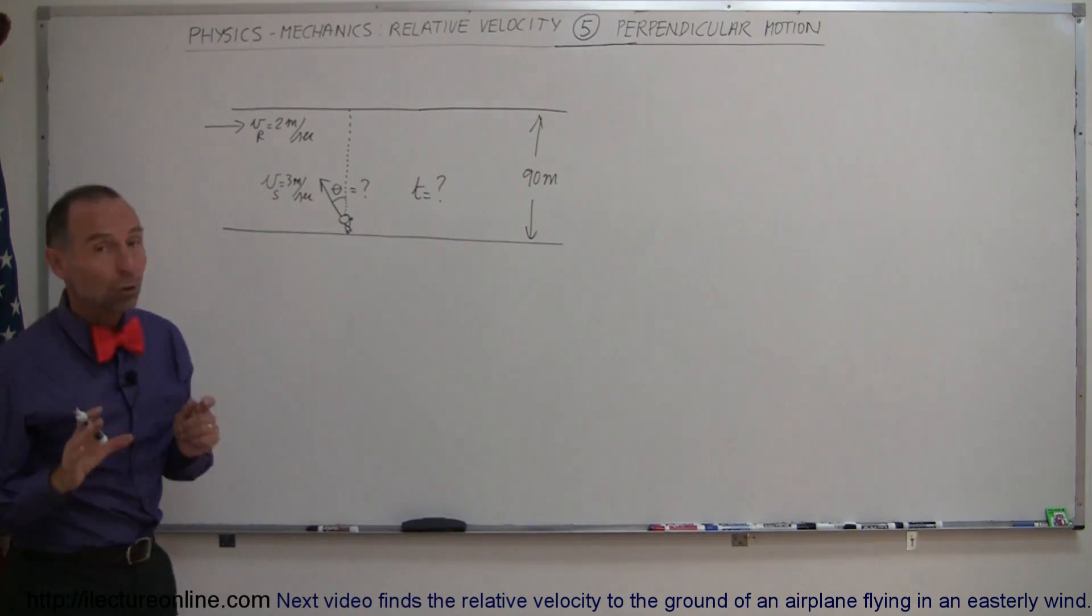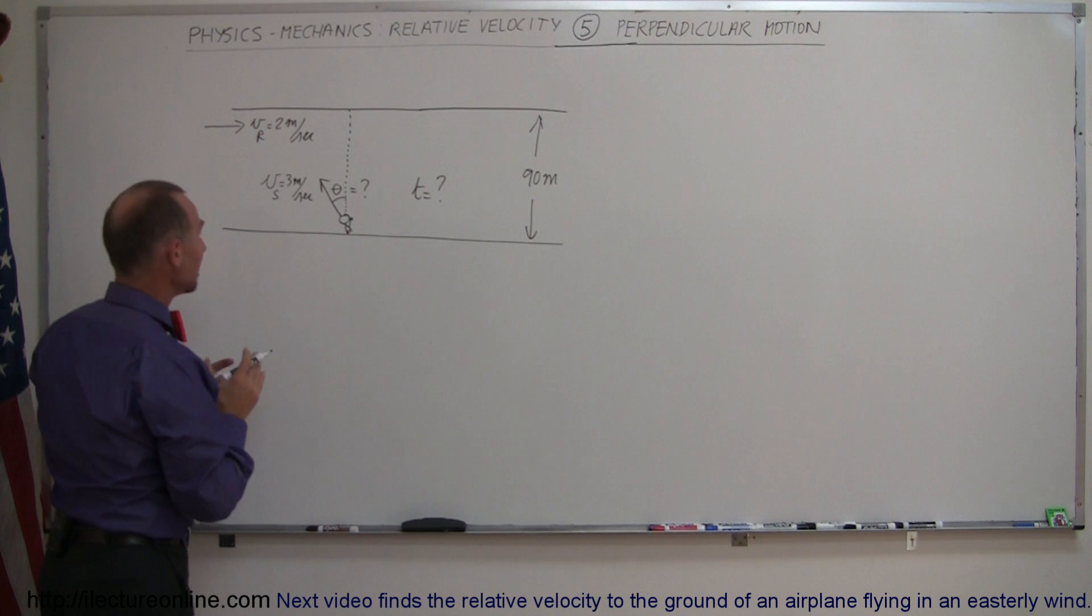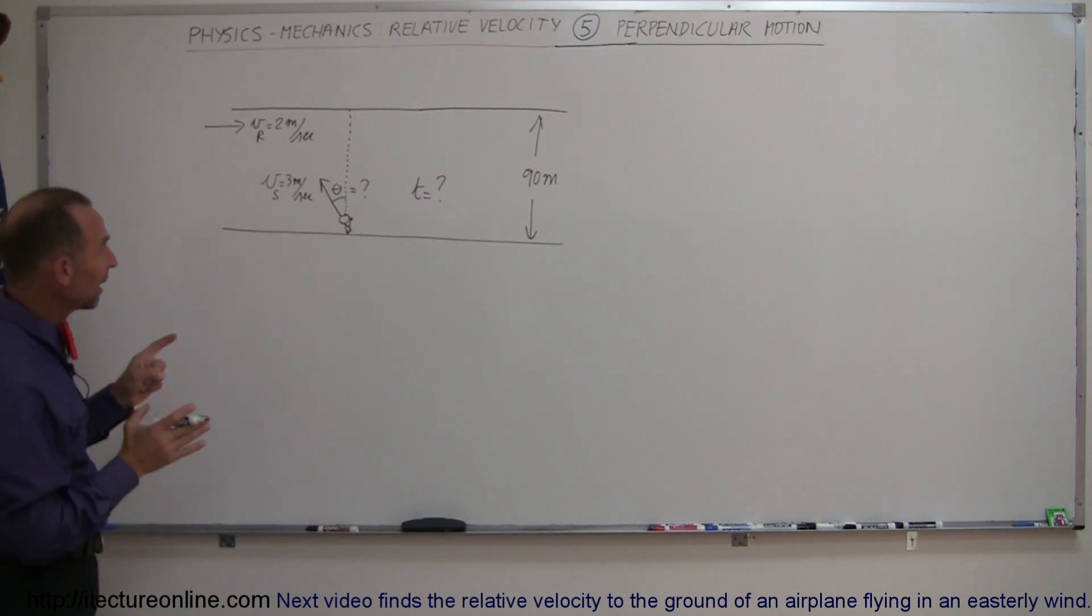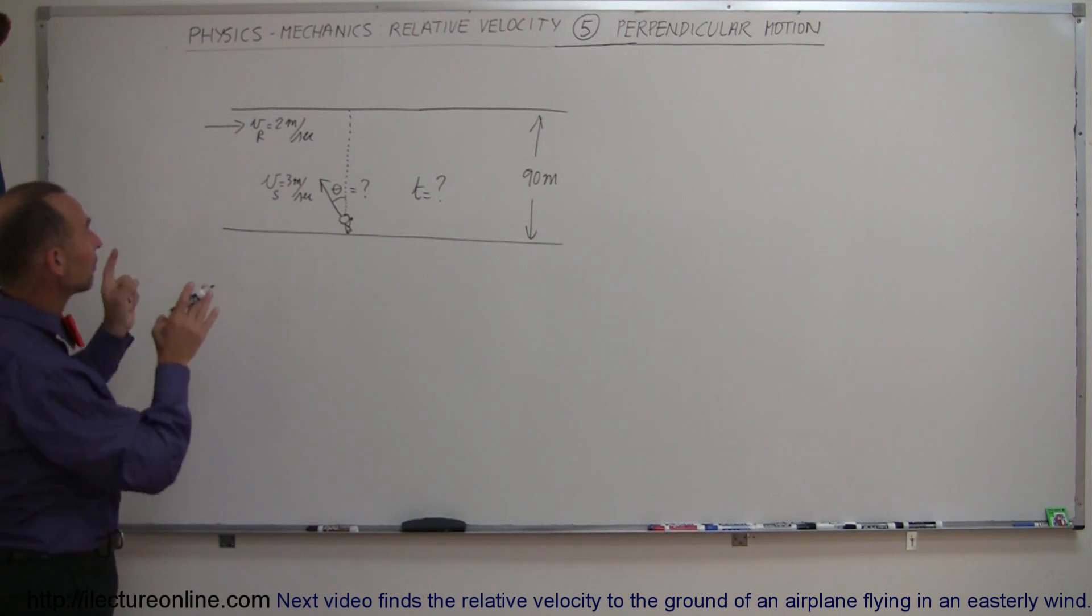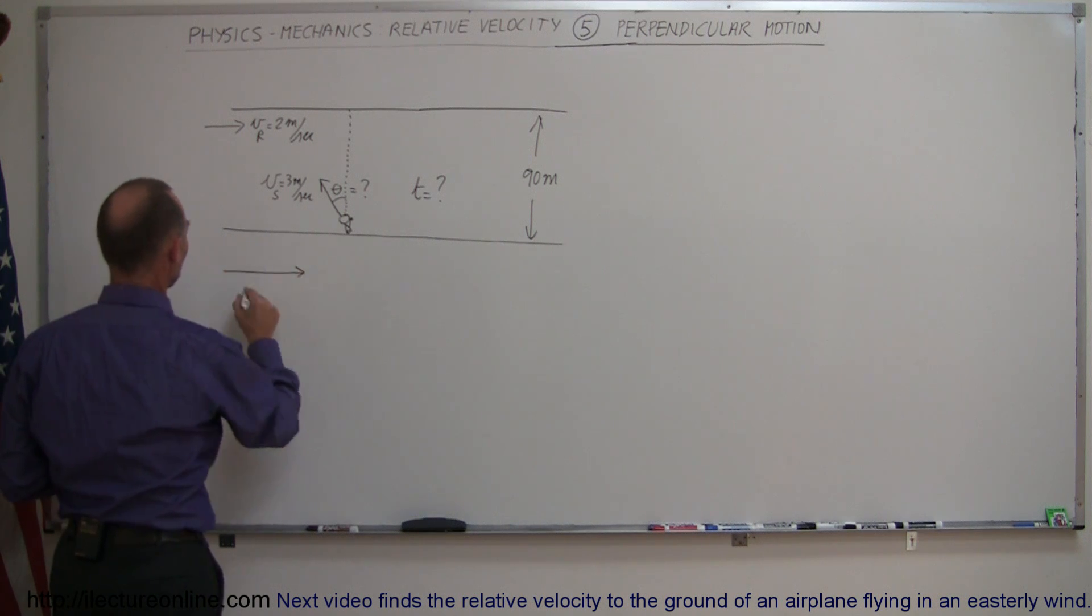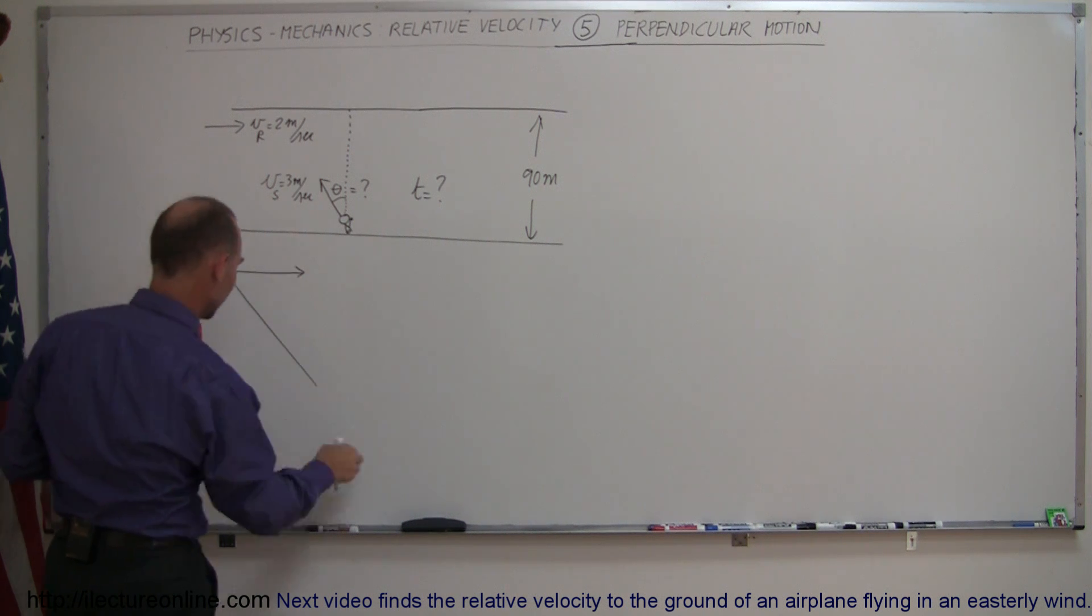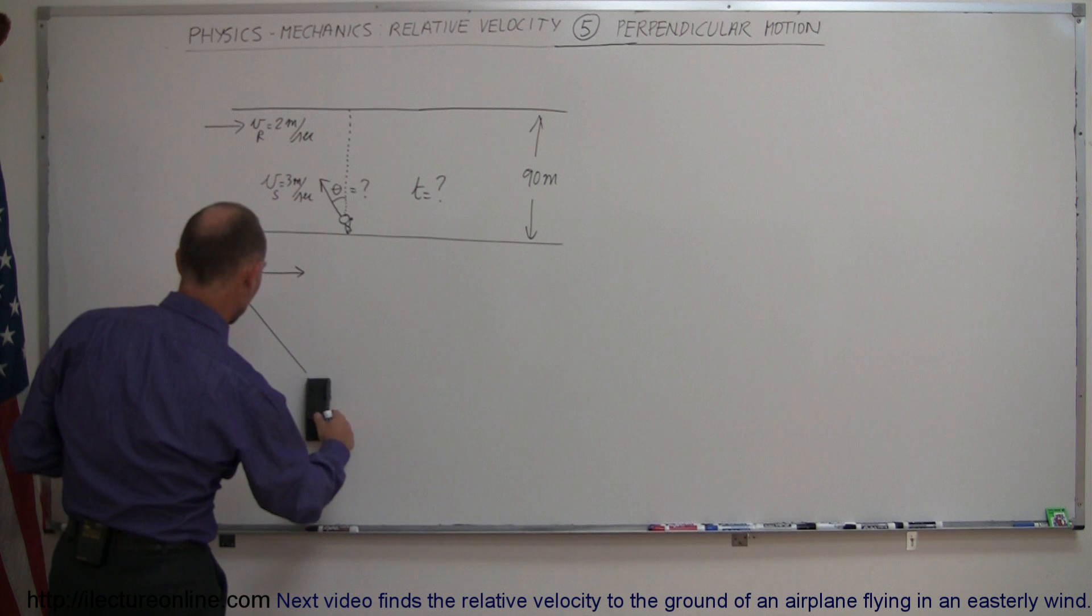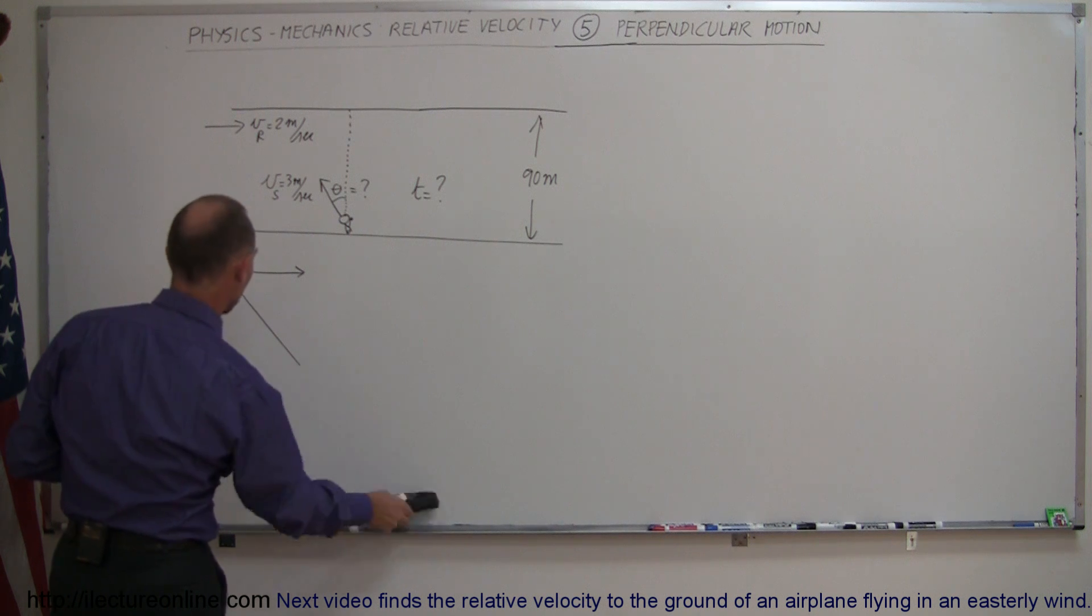Okay, so how do you do that? Again, you use vectors. You let the length of the vectors represent the velocity of the swimmer and the velocity of the river. So we have the river in this direction, but now in this case we'll have the swimmer in this direction. So this is the velocity of the swimmer, that's the velocity of the river.